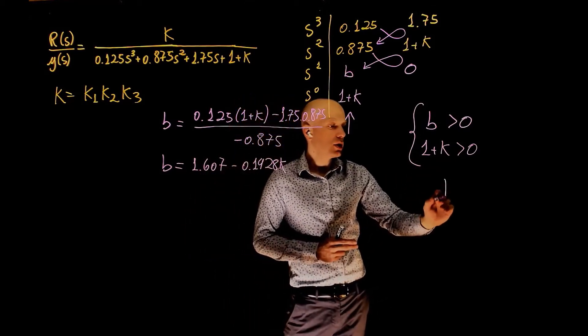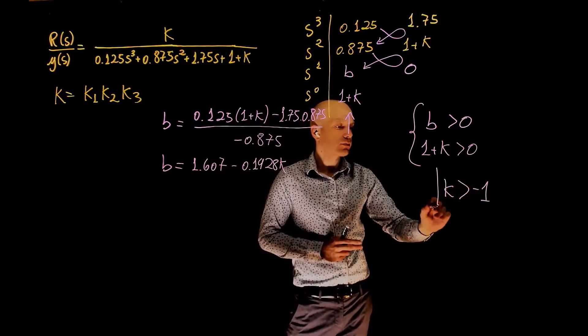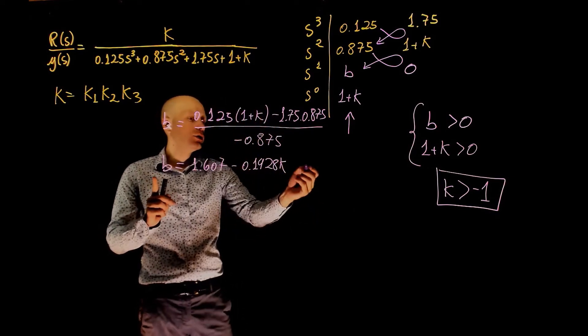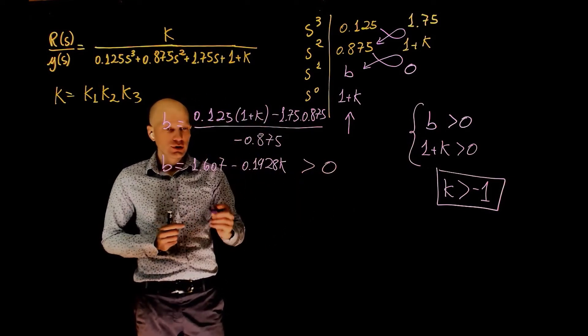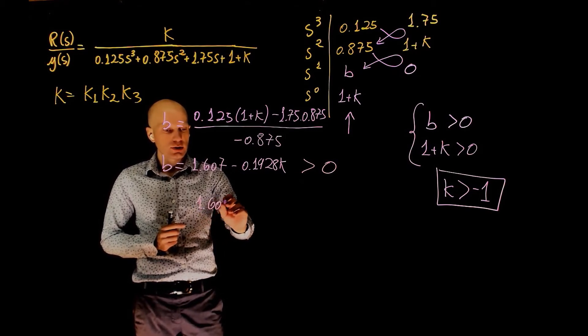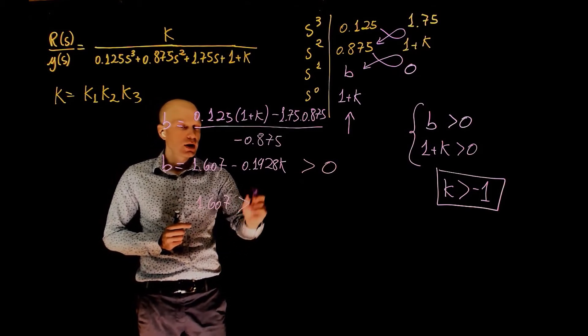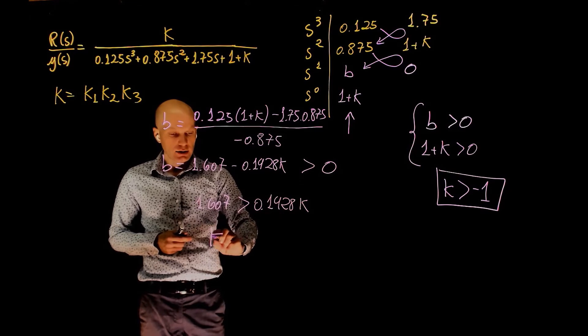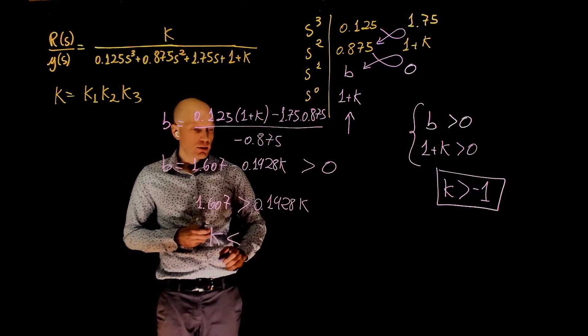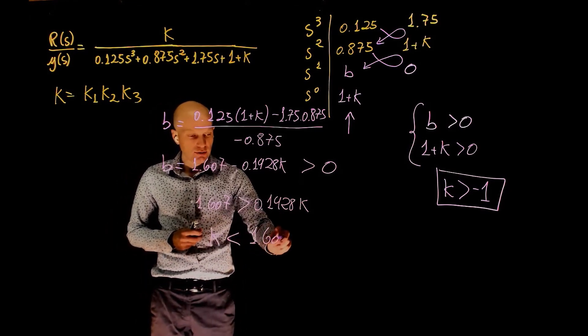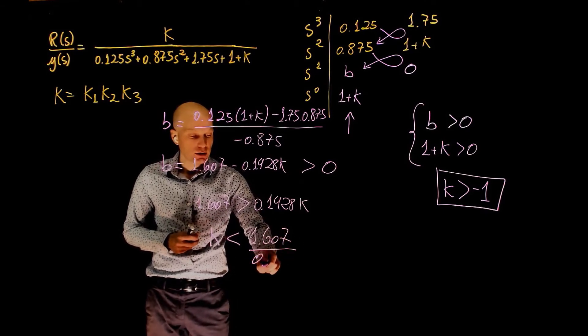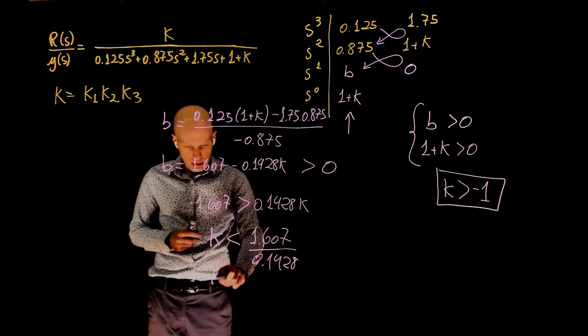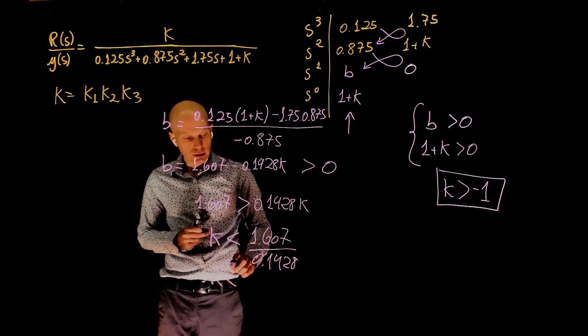From the second condition, k needs to be greater than negative 1. And from the first condition, b that we have here needs to be greater than 0. Now we can rearrange this equation, we have 1.607 greater than 0.1428 k, which means that k needs to be smaller than 1.607 divided by 0.1428. And this is equal to k smaller than 11.25.